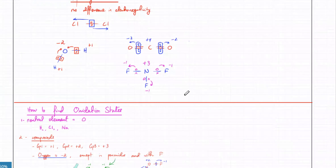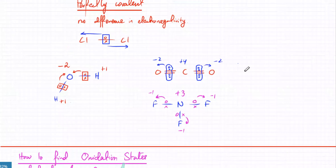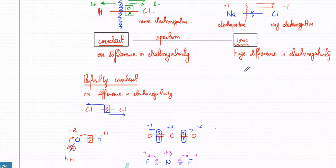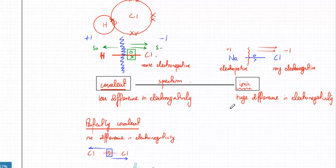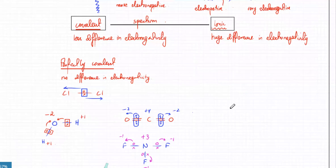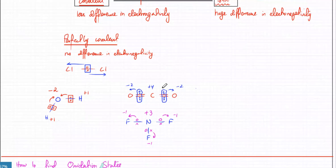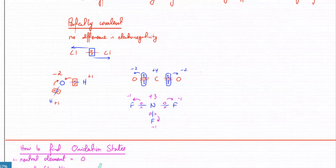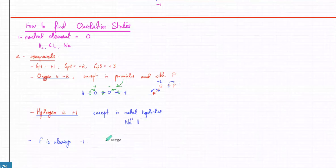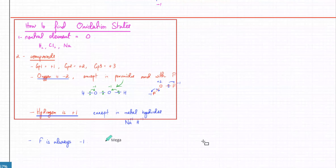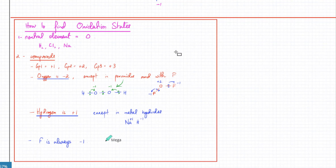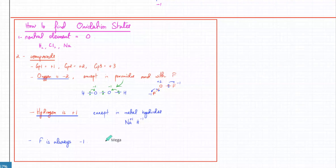Remember, oxidation state is not the actual charge. Most of the time it's the partial charge - you just want to know who gains those electrons more compared to the other one. That is what oxidation states tell you. Make sure you write down these rules. In the next class we're going to learn how to calculate oxidation states more quickly - the simpler method of finding oxidation states.